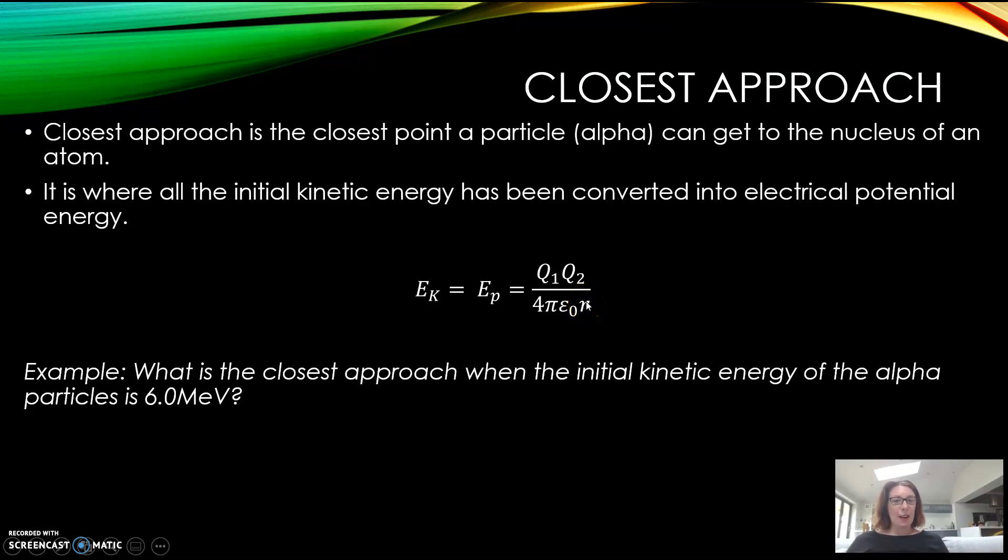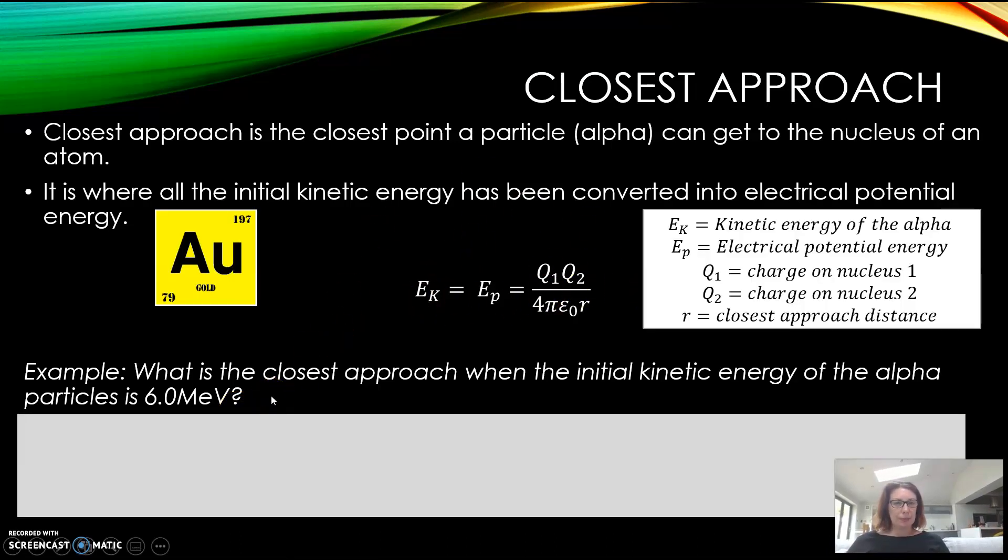What is the closest approach when the initial kinetic energy of an alpha particle is 6 MeV? I'm going to show you how to use this equation to figure this out. Here's some more detail: Ek is the kinetic energy, Ep is the electrical potential energy, and r is the closest approach distance. For gold, you want 79 because that's the number of protons.